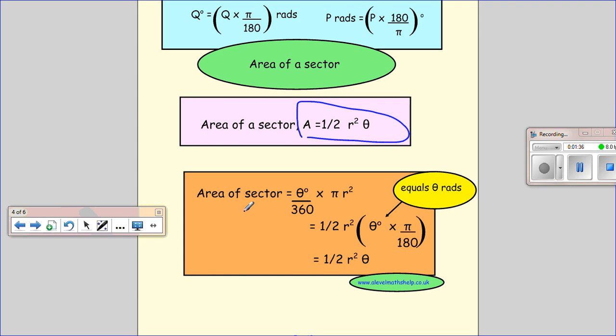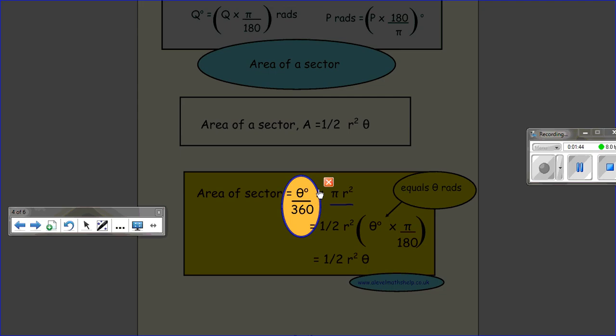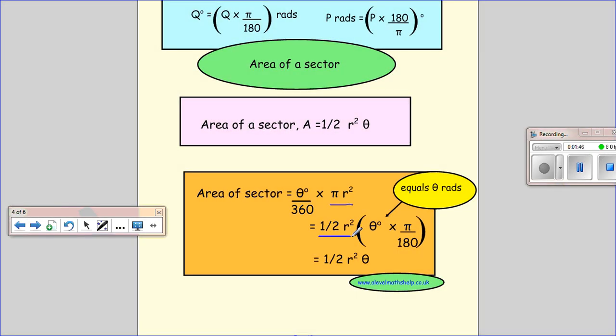For the area of a sector in degrees, the total area of a circle is pi r squared. Then we want the fraction that our sector is. This time we factorise out a half r squared, leaving us with theta in degrees times pi over 180. And this again is our conversion into radians, and so gives us our answer, a half r squared theta.